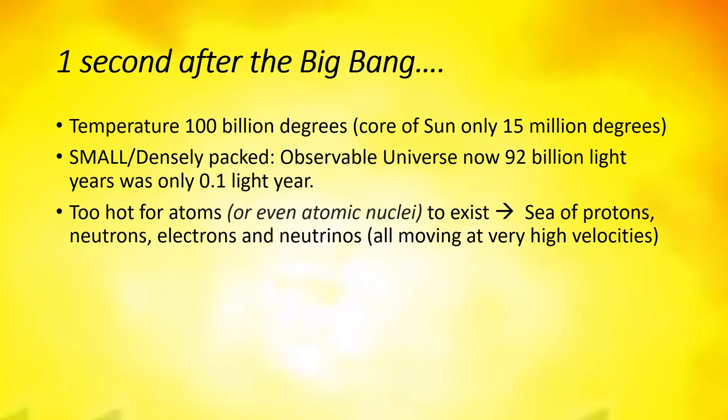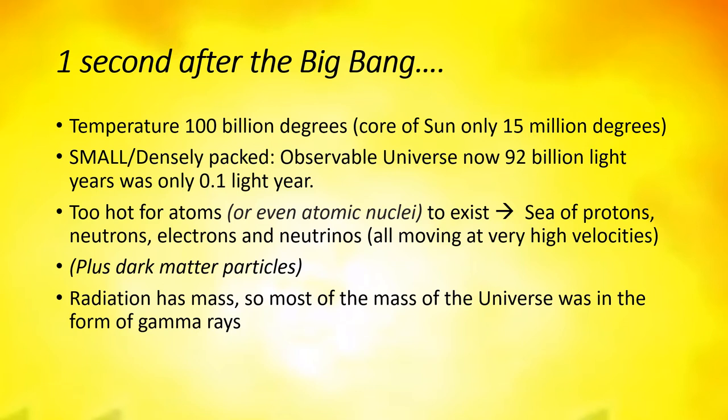It was far too hot for atoms or even atomic nuclei to exist. It consisted of a sea of separately moving protons, neutrons, and electrons, and very light particles called neutrinos, all moving extremely fast. We also think there were dark matter particles in the early universe; even now we know very little about them. The universe was packed full of gamma rays. In fact, because radiation has mass, most of the mass of the universe wasn't in these particles but was actually in the form of these extremely energetic gamma rays.